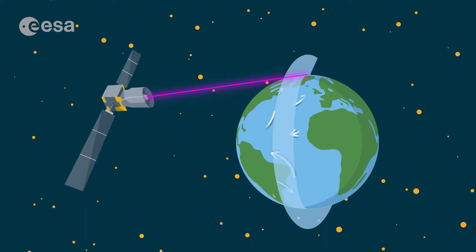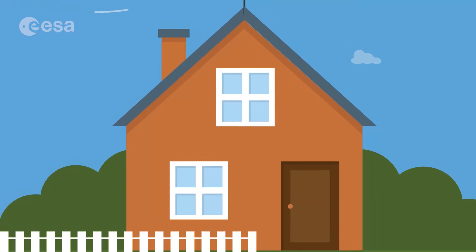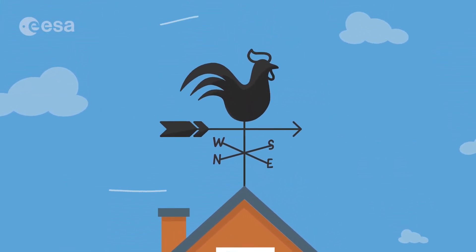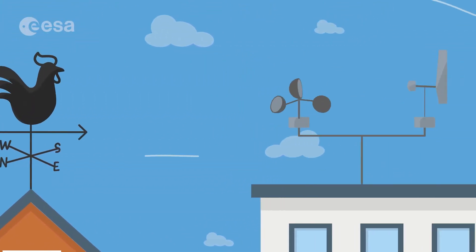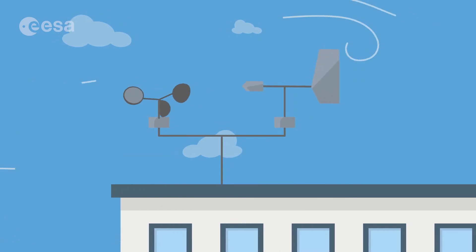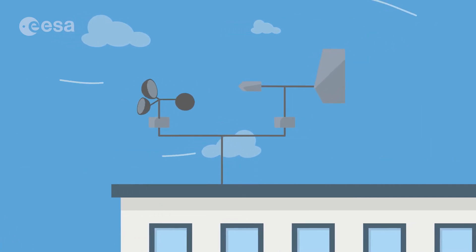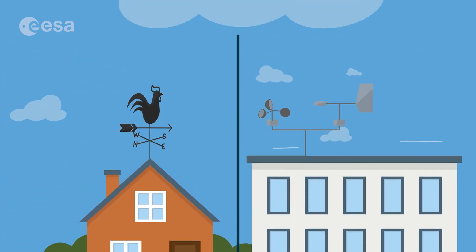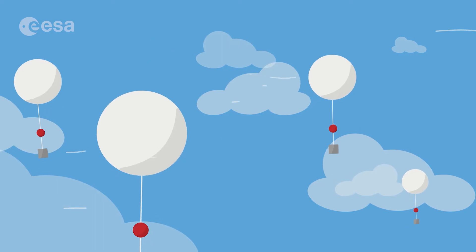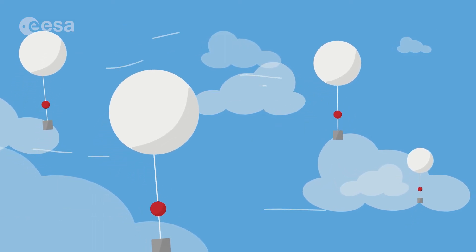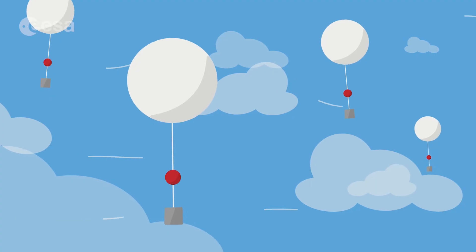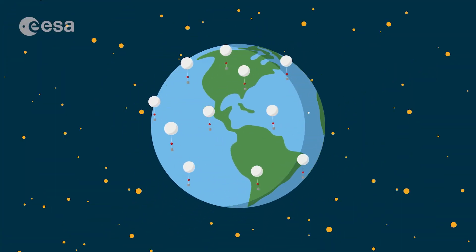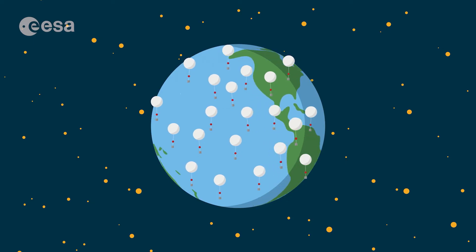We can also measure wind from Earth. You've probably seen a wind vane on homes that shows which direction the wind is blowing. Weather stations have a similar device called an anemometer — that tells you how fast and in what direction wind flows. Weather balloons also measure wind speed and direction when rising through the atmosphere. More than a thousand balloons are sent up every day all over the world to get a big picture of wind.